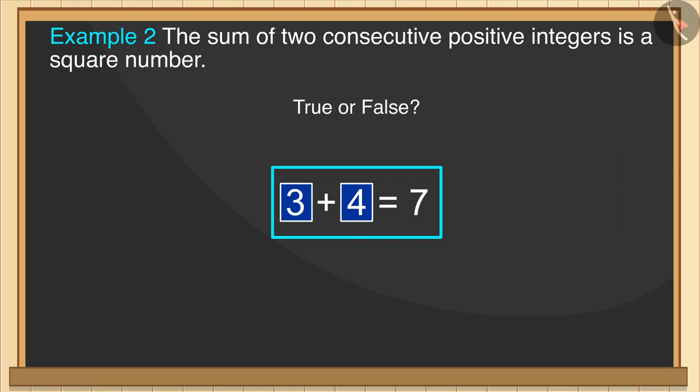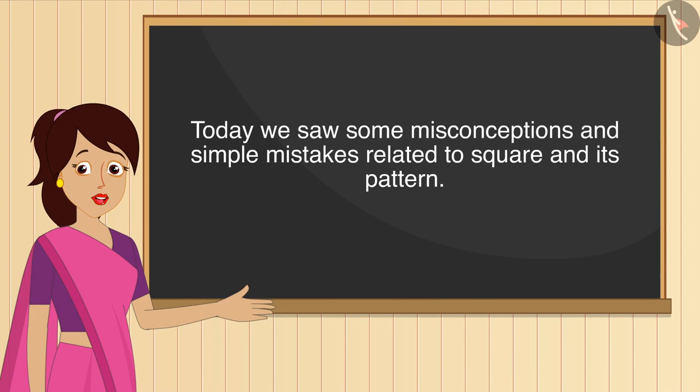For example, the sum of numbers 3 and 4 is 7, which is not a perfect square number. Hence, this statement is false. In this video, we saw some misconceptions and simple mistakes related to square and its pattern.